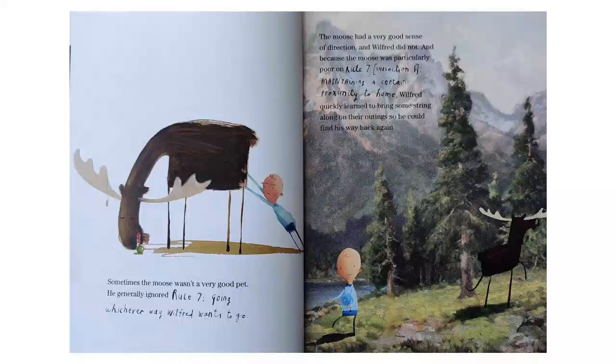Sometimes the moose wasn't a very good pet. He generally ignored rule seven, going whichever way Wilfred wants to go. The moose had a very good sense of direction, and Wilfred did not. And because the moose was particularly poor on rule seven, maintaining a certain proximity to home, Wilfred quickly learned to bring some string along on their outings, so he could find his way back again.